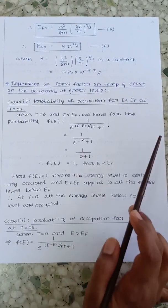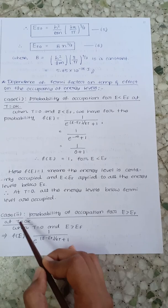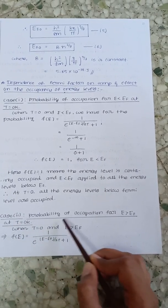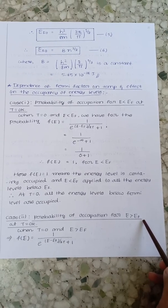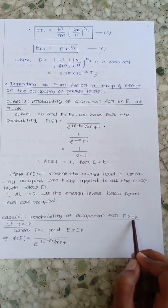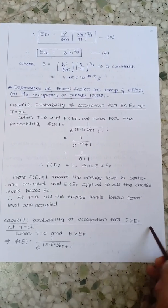That is the first case. Next is case 2. Case 2 is probability of occupation for energy greater than Fermi energy, which applies to all the energy levels above Fermi energy.